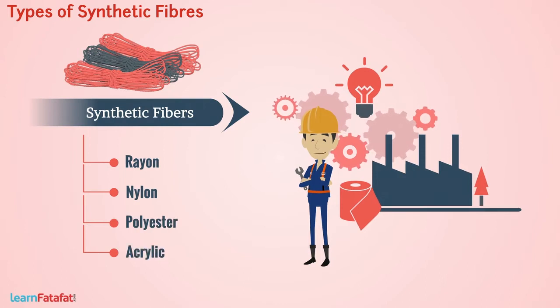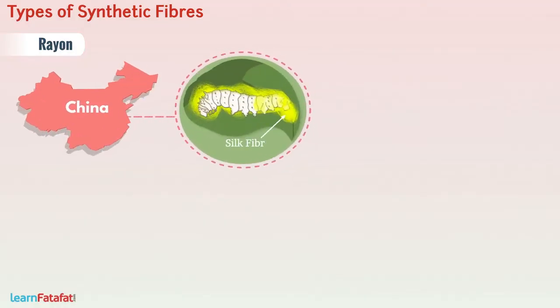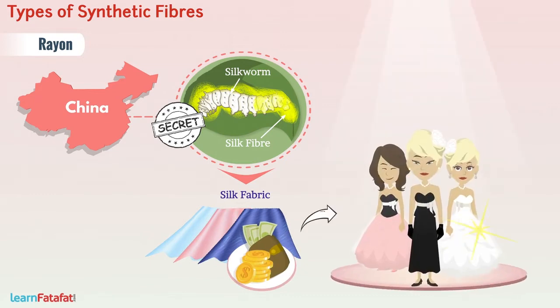We will learn each of these one by one. Speaking about rayon, it has an interesting history. China discovered that silk fibers are obtained from silkworm. However, this discovery was kept as a secret for many years.